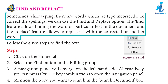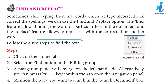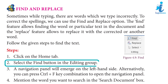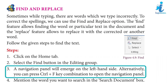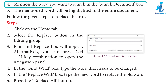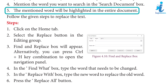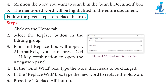Find and Replace: While typing, there are words which may be typed incorrectly. To correct the spellings, we can use the Find and Replace option. The Find feature allows finding a word or particular text in the document, and the Replace feature allows replacing it with the correct or another word. Follow the given steps to find text. Step 1: Click on the Home tab. Step 2: Select the Find button in the Editing group. Step 3: A Navigation Panel will emerge on the left-hand side. Alternatively, you can press Ctrl+F to open the navigation panel. Step 4: Type the word you want to search in the search document box. Step 5: The word will be highlighted in the entire document.